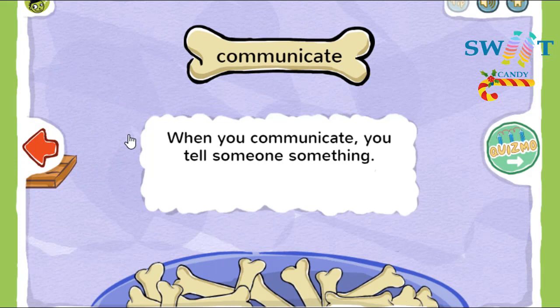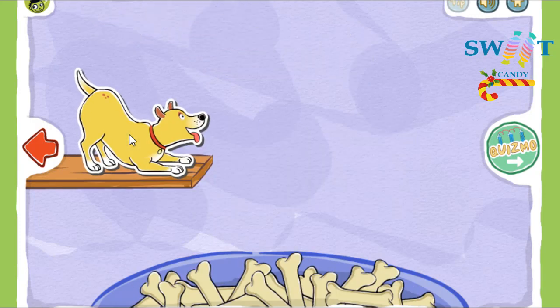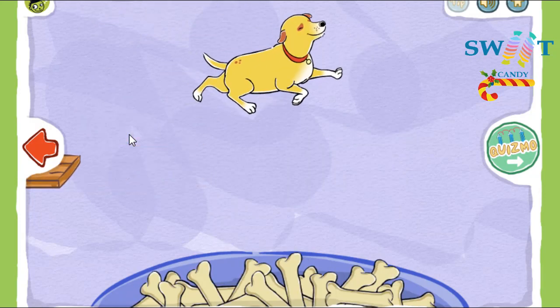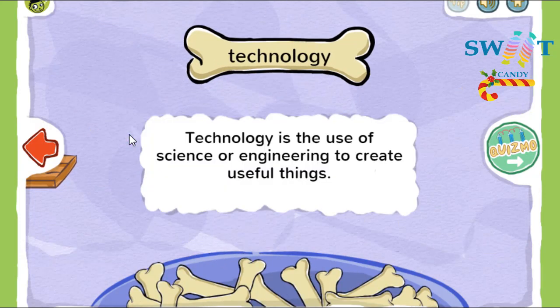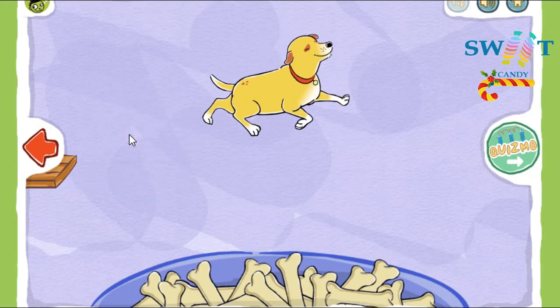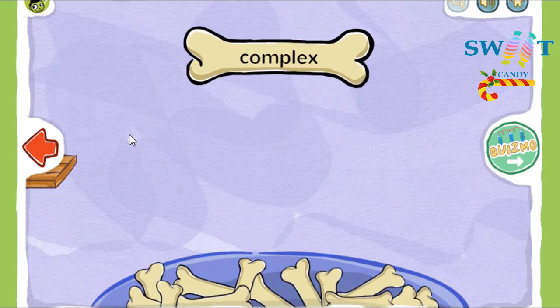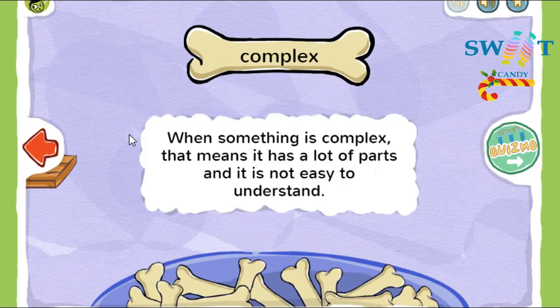When you communicate, you tell someone something. Technology is the use of science or engineering to create useful things. When something is complex, that means it has a lot of parts and is not easy to understand.